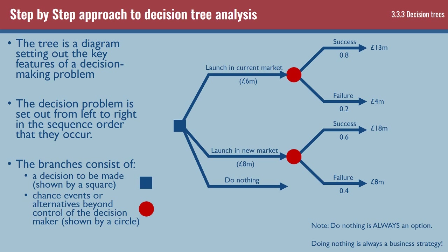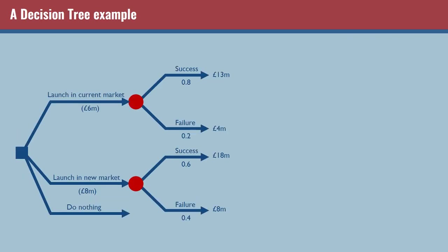We've got the value the project would return if successful and if it fails. If we launch in the current market and it's successful, that gives us 13 million pounds; failure returns 4 million pounds, so we make a loss. For the new market, it's going to return 18 million pounds if successful - there's less chance of success at only 60%, but it's more lucrative. If it's a failure it still returns 8 million, which actually recovers the cost of launching in the new market in the first place.